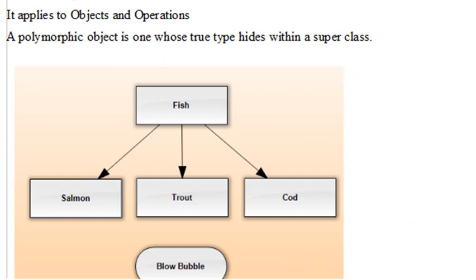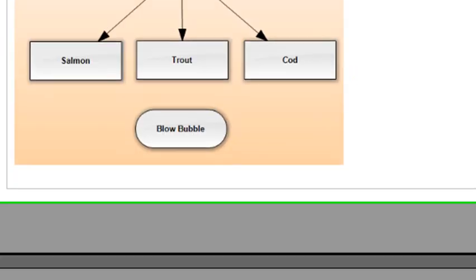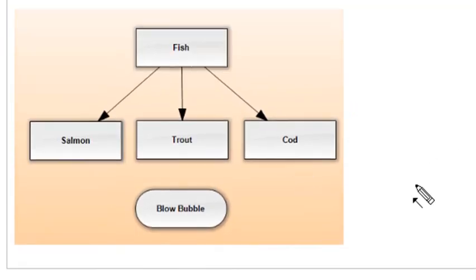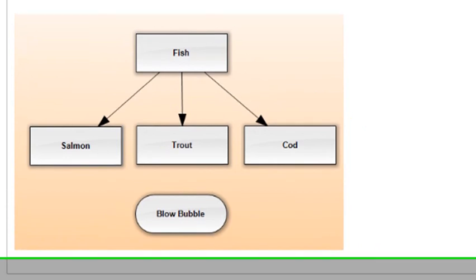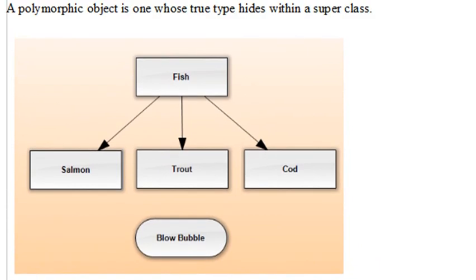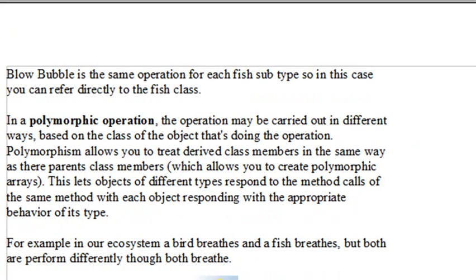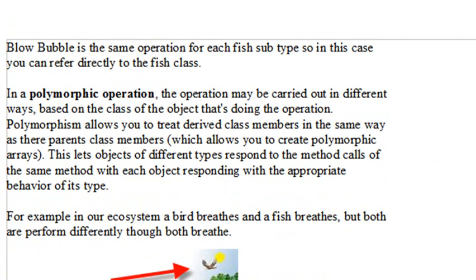But basically, let's just look at the diagram. You have a fish, and you have a salmon, a trout, and a cod, and they all have the characteristics that they can blow bubbles. And that would actually exist in the superclass. They're all derived from the same superclass. So a polymorphic object is one whose true type hides within a superclass.